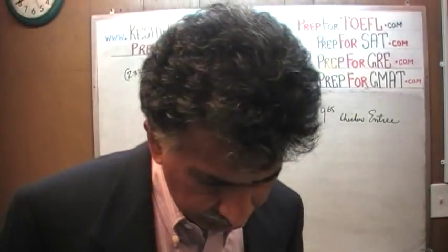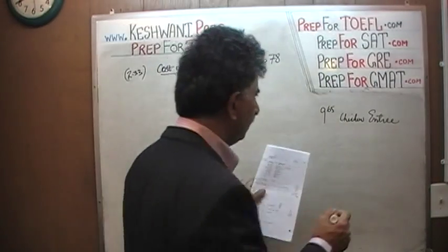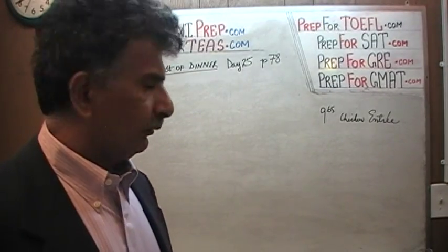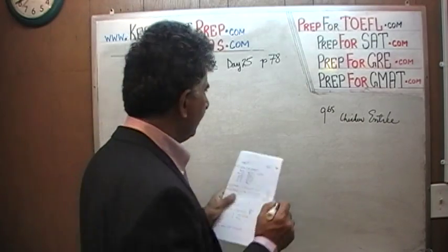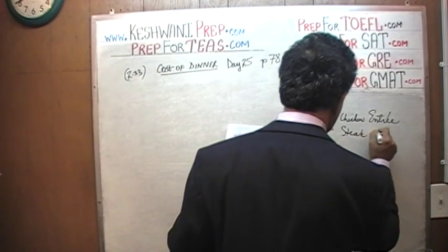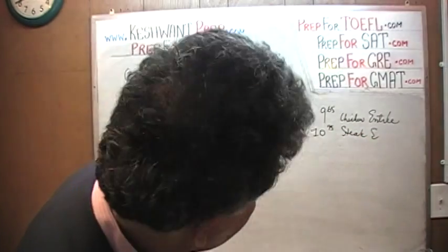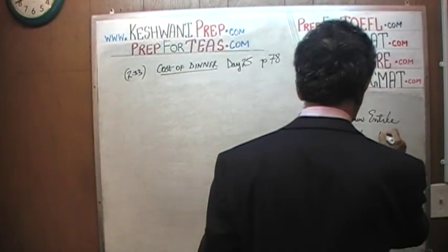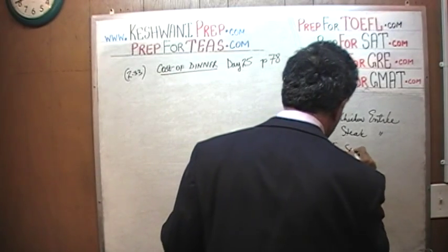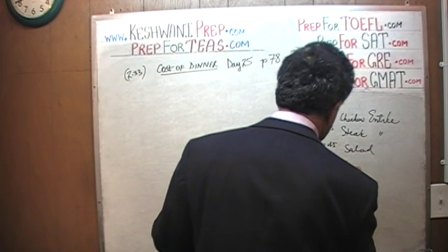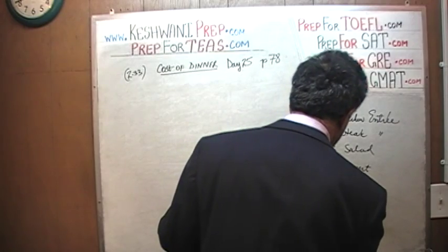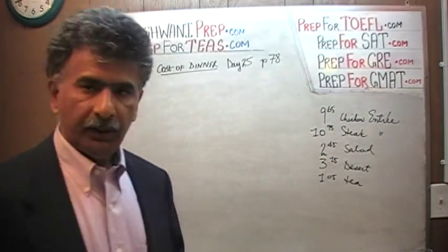Notice these people are very particular about the English language — they even go to the trouble of putting the accent on "entrée." Very particular. They go on to tell us that the steak entrée is $10.95. We also have salad for $2.45, dessert for $3.15, and tea for $1.05 each.